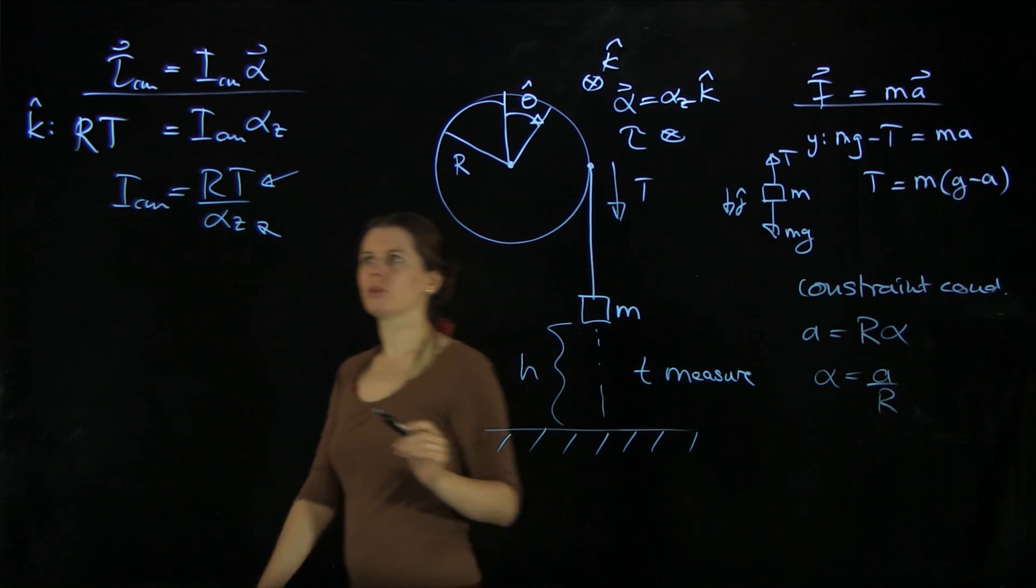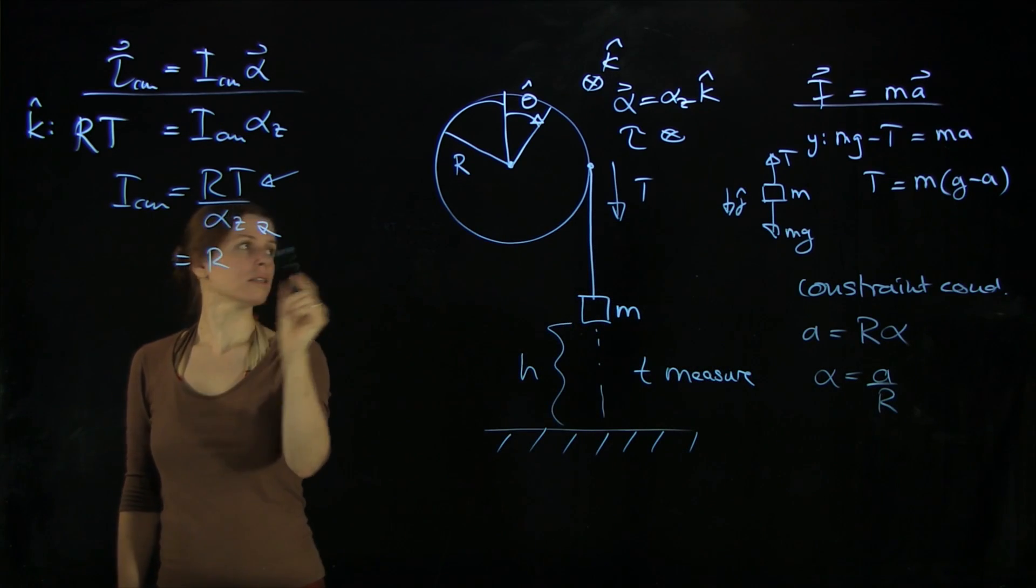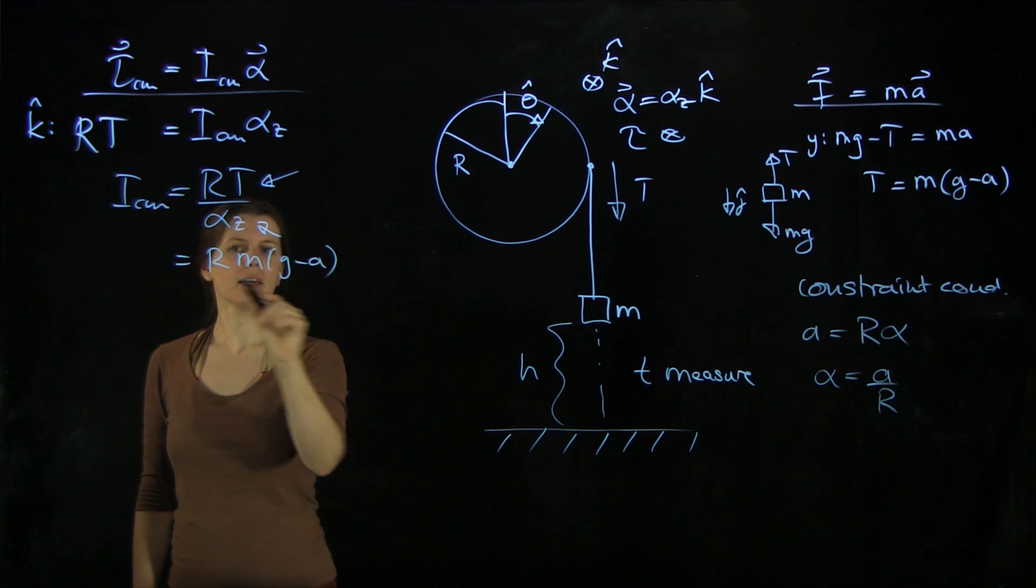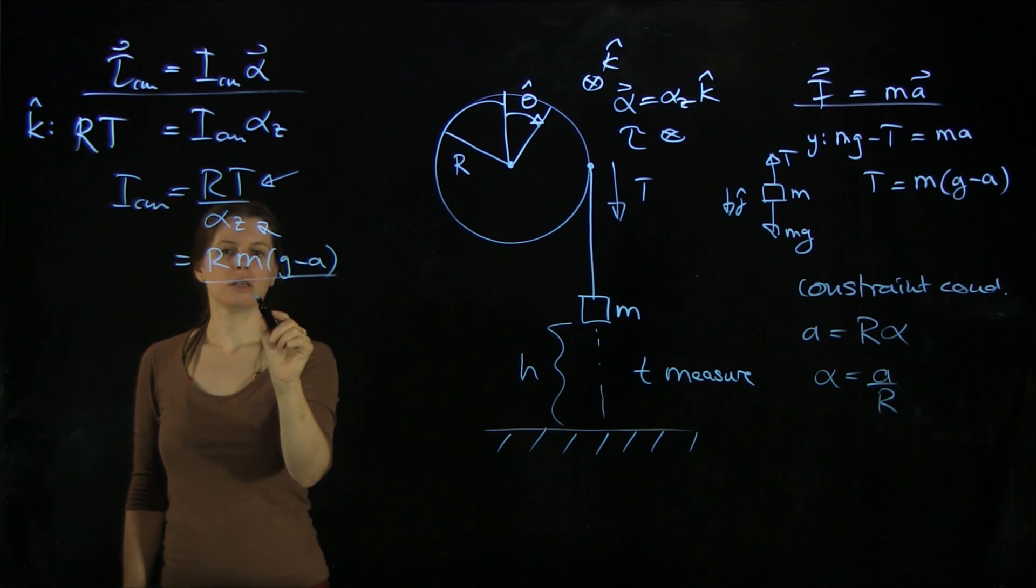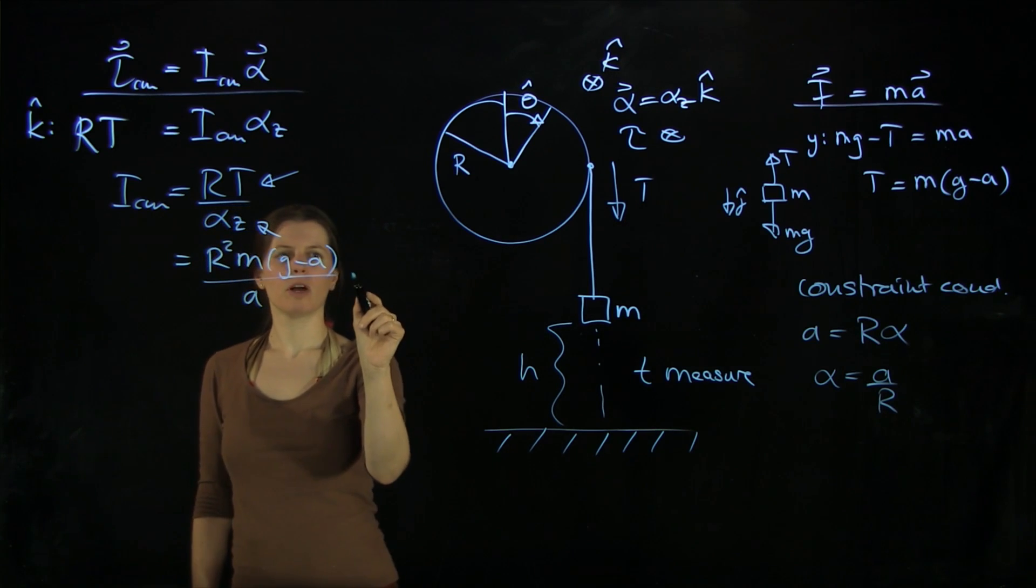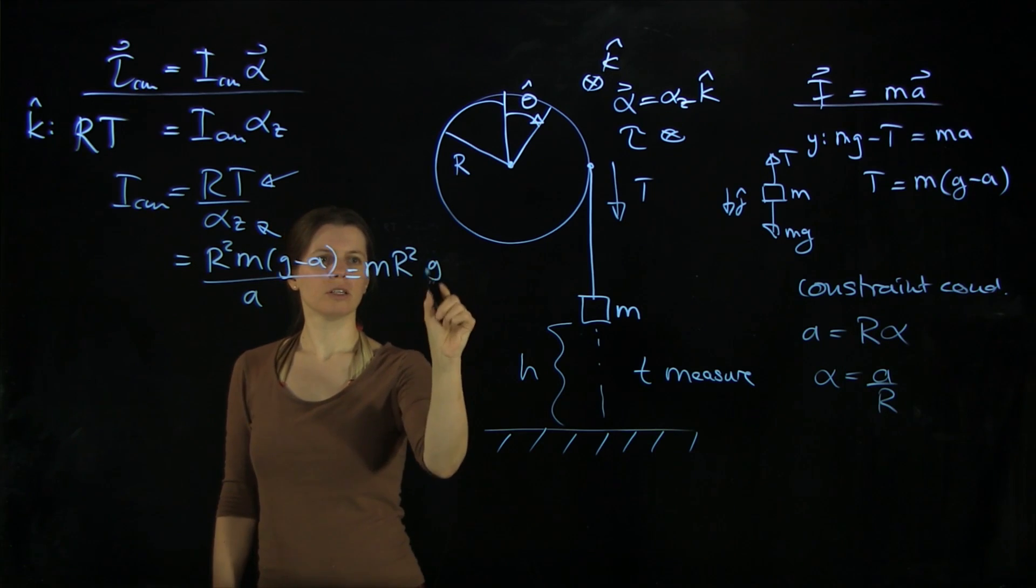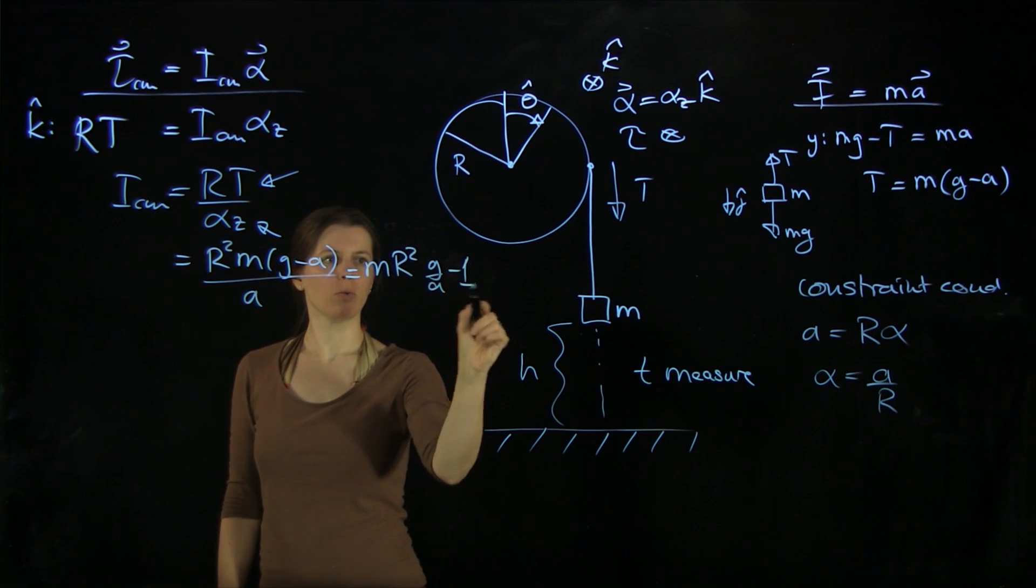So let's put that in here. r times mg minus a over a over r. And then we get another r here. And we can write that just a little bit more compact: m r squared times (g over a minus 1).